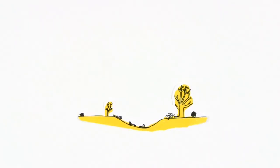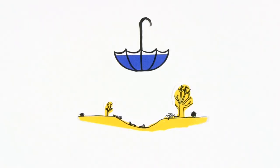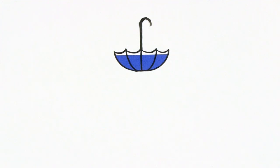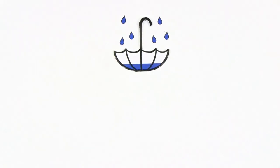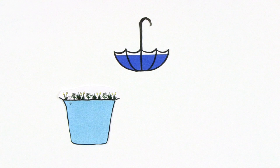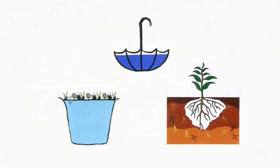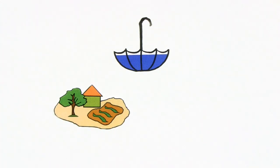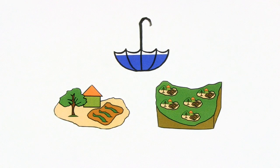Land-based rainwater harvesting is one solution to the water scarcity problem. It entails the collection of water and subsequent storage in reservoirs or directly within the soil profile. This rainwater harvesting method can be classified into micro-catchment and macro-catchment harvesting.